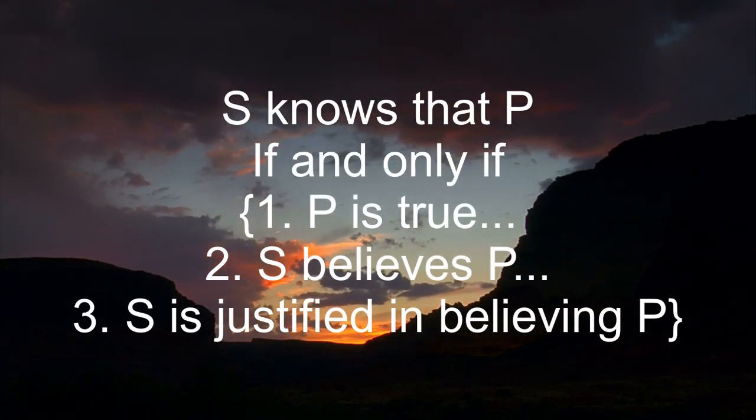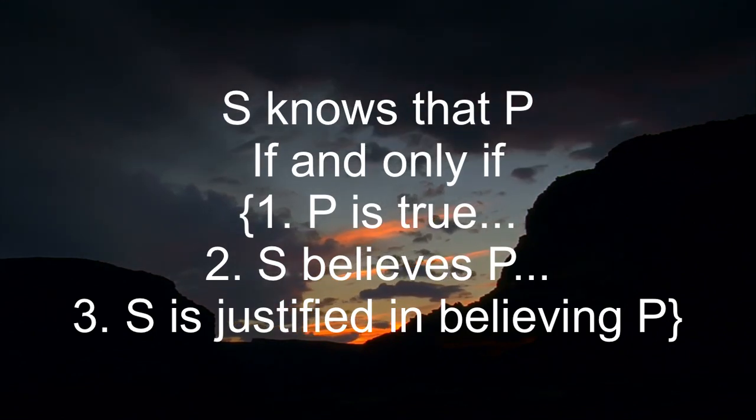The third condition that people have traditionally added is that the belief has to be justified — supported by some kind of good epistemic reason, some good reason to believe it. It might be empirical evidence or a good argument; the nature of justification is left somewhat open by the analysis. But the third condition is that S has to be justified in believing P. So the three conditions are: P must be true, S must believe P, and S must be justified in believing P. In the traditional analysis, those three are jointly sufficient.